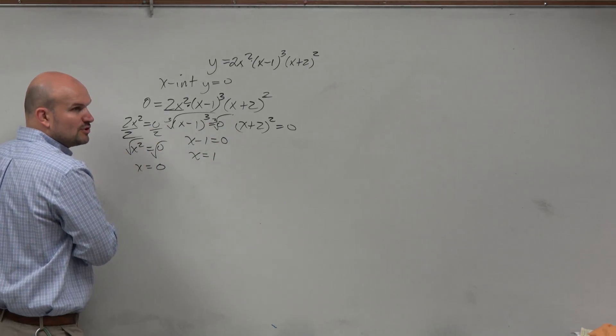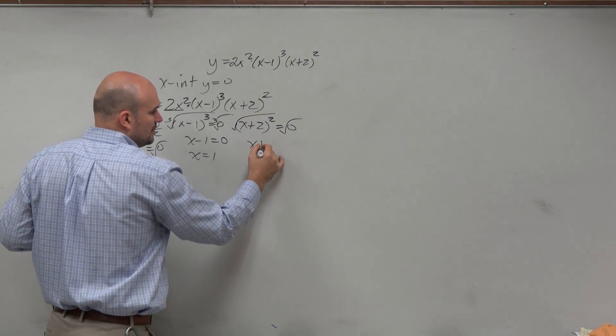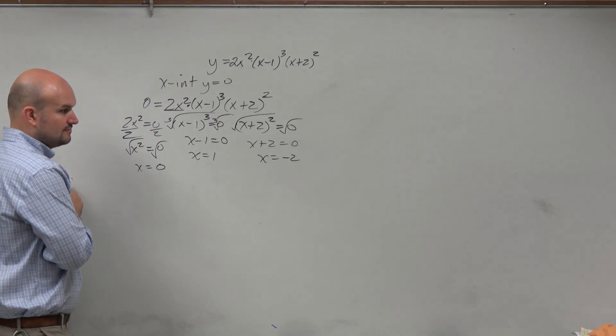Here, I don't subtract 2 and then take the square root. I take the square root first. And then it's equal to negative 2. Right?